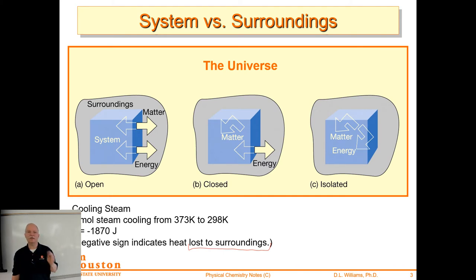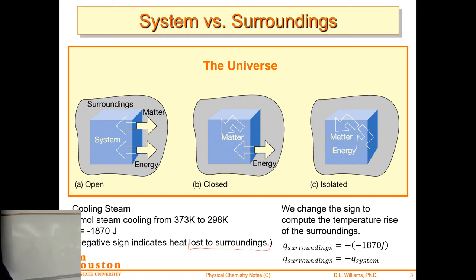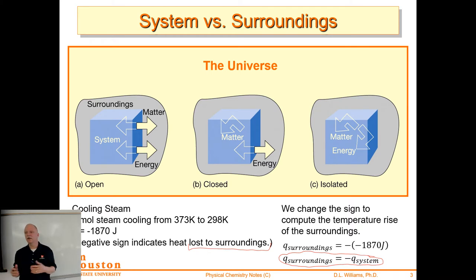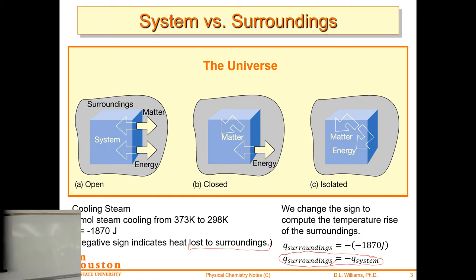Following that negative sign is the trick to thermodynamic understanding — deciding what the system is and whether energy decreased or increased. The surroundings equals minus the system. A lot of times when we see this written, it's another statement of the first law — energy is neither lost nor created. If heat comes out of the system, it goes into the surroundings. Q_surroundings equals negative Q_system.